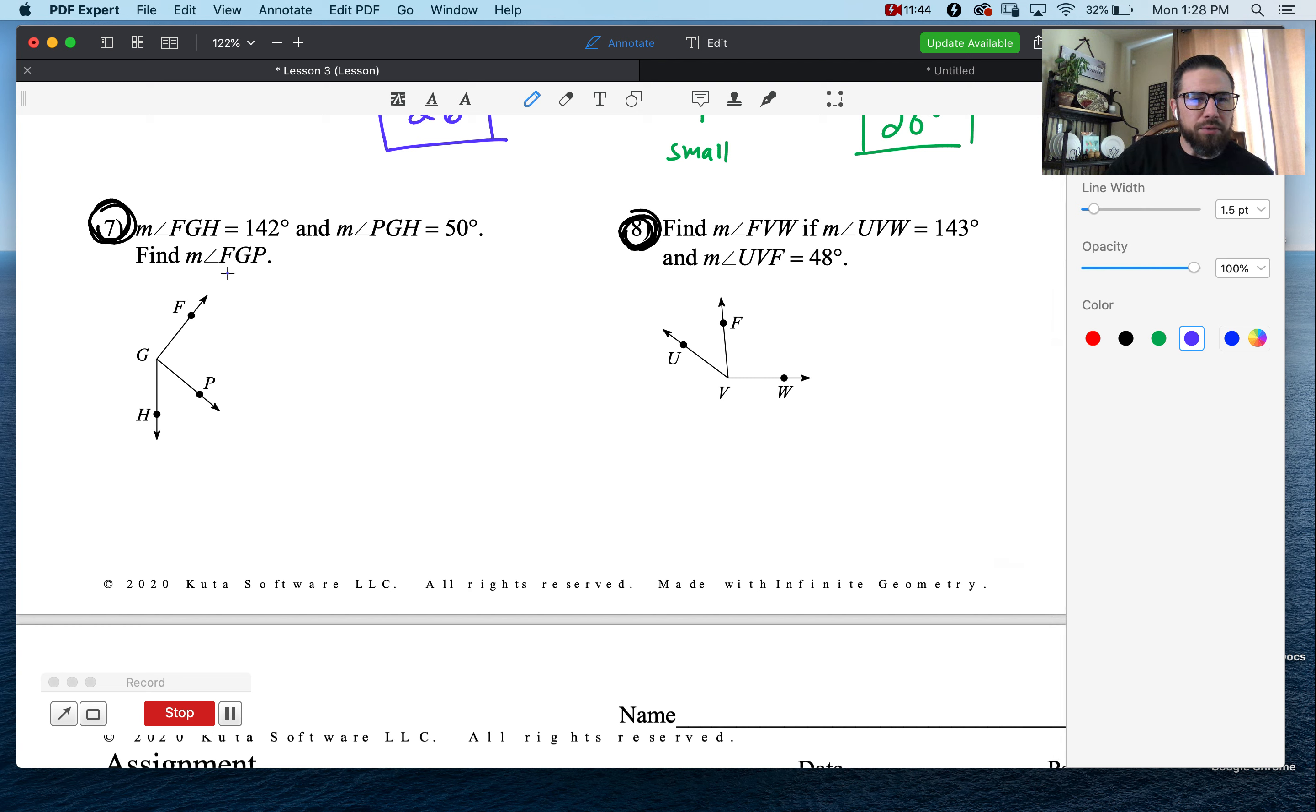All right. What do they want us to find here? Measure of angle FGP. Well, F to G to P is just a piece. It's a small piece. If they want us to find the small piece, that makes it easy for us because it's big minus small. So let's take our big number, which is 142, subtract the other small piece, which is 50. And it looks like we probably get 92 degrees.